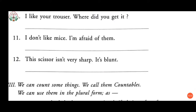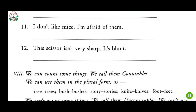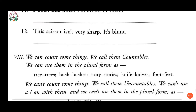Eleventh: 'I don't like mice, I am afraid of them' — this one is correct. Twelfth: 'This scissor isn't very sharp, it's blunt' — scissors is always plural, so it becomes 'These scissors aren't very sharp, they are blunt.' So we have completed this section.